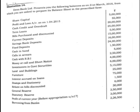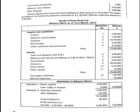Calls in arrears: 5,000. Cash with RBI: 2 lakh 50,000. Money at call and short notice: 4 lakh. Investment in government securities: 6 lakh. Land and buildings: 5 lakh 15,000. Furniture: 75,000. Interest accrued on loans: 75,000. Stamps and stationery: 1,500. Rebate on bills discounted: 6,000. General reserve: 30,000. Statutory reserve: 3 lakh 50,000. Profit of current year before appropriations under Section 17: 3 lakh.